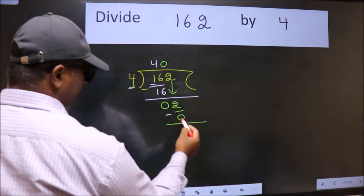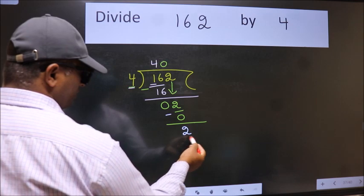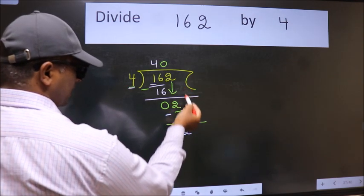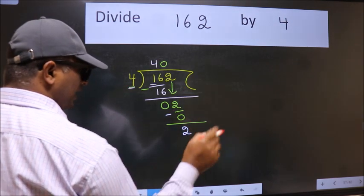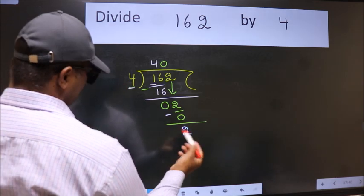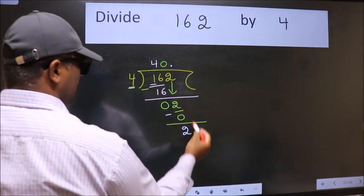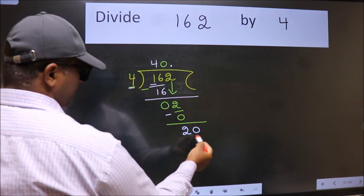Now we subtract. We get 2. Over here we did not bring any number down. And 2 smaller than 4. So now we can put dot and take 0. So 20.